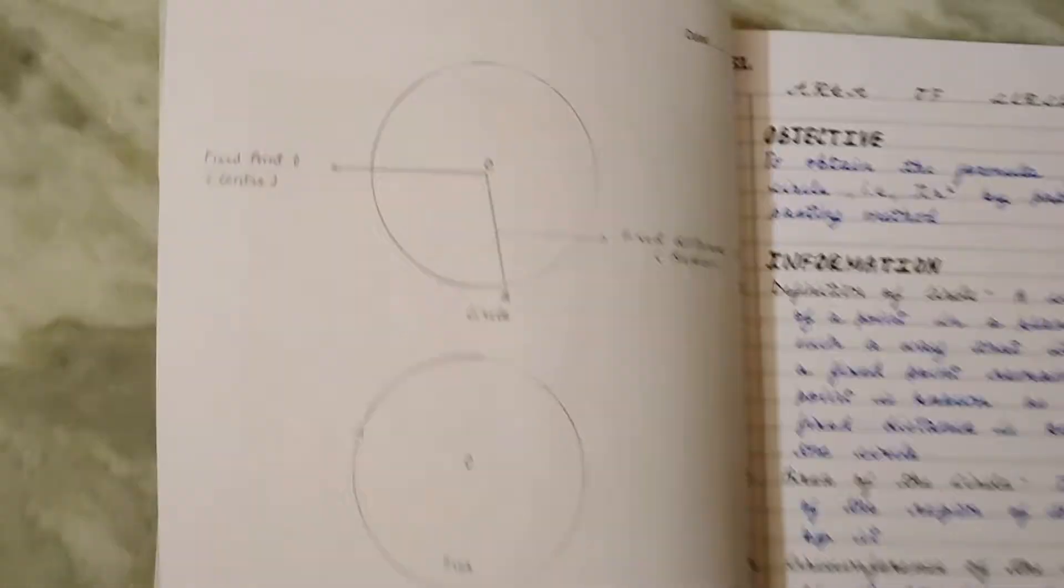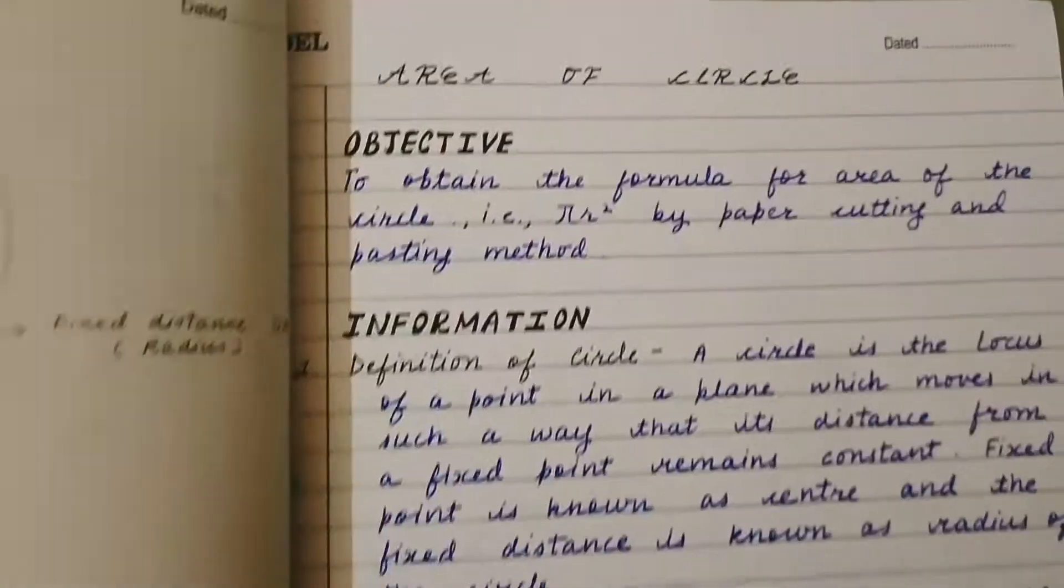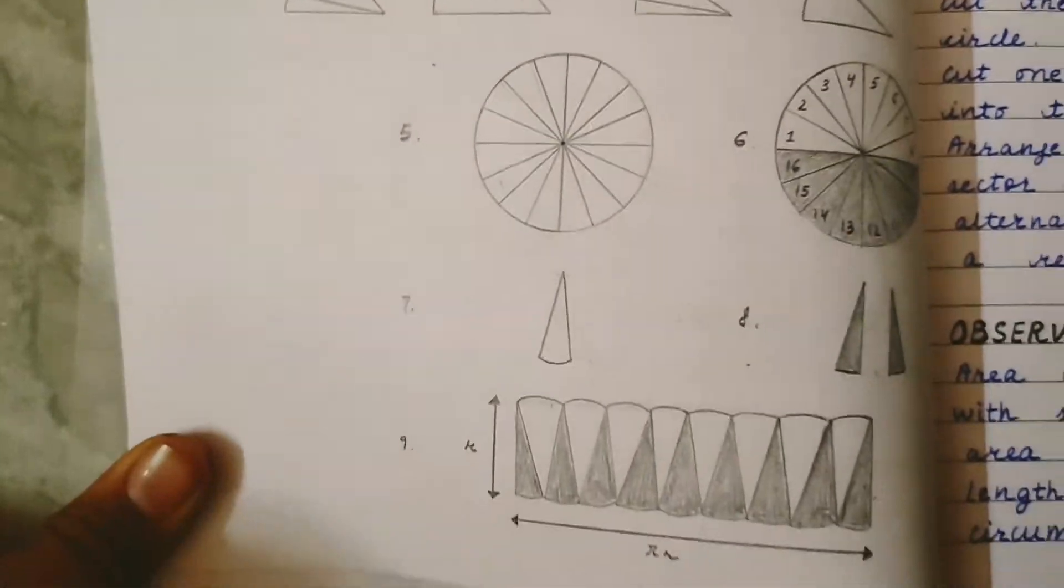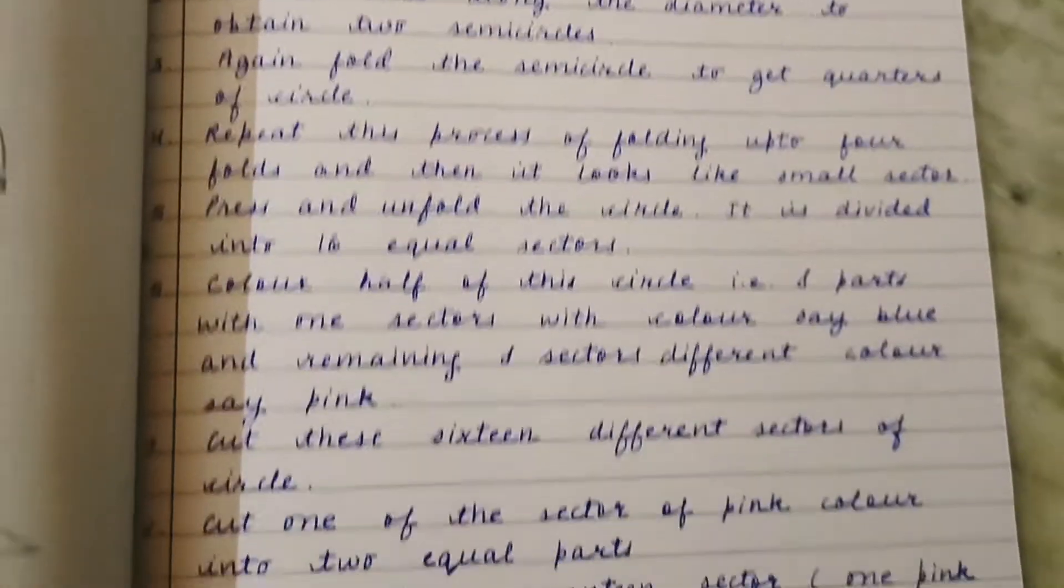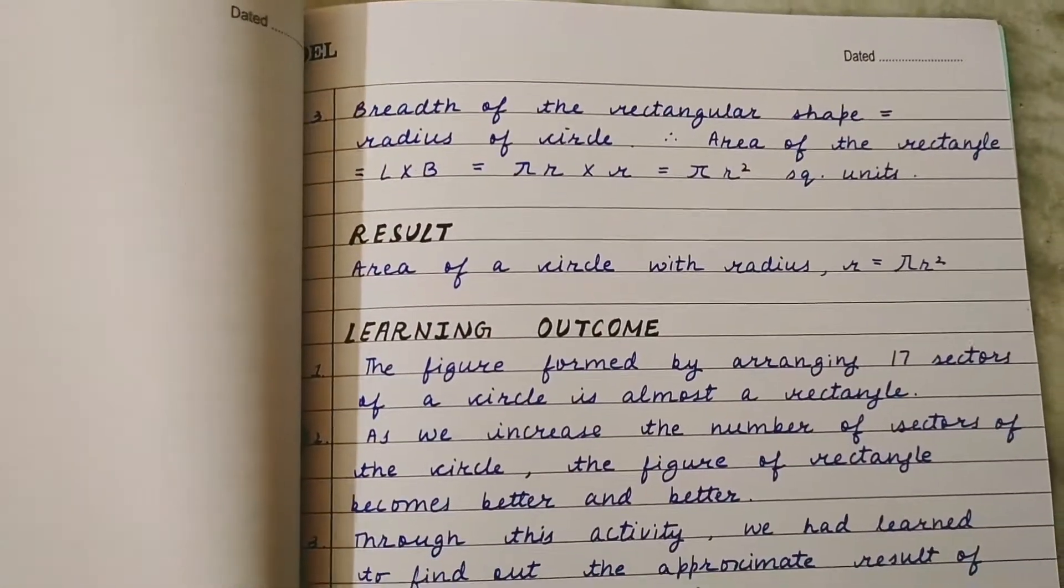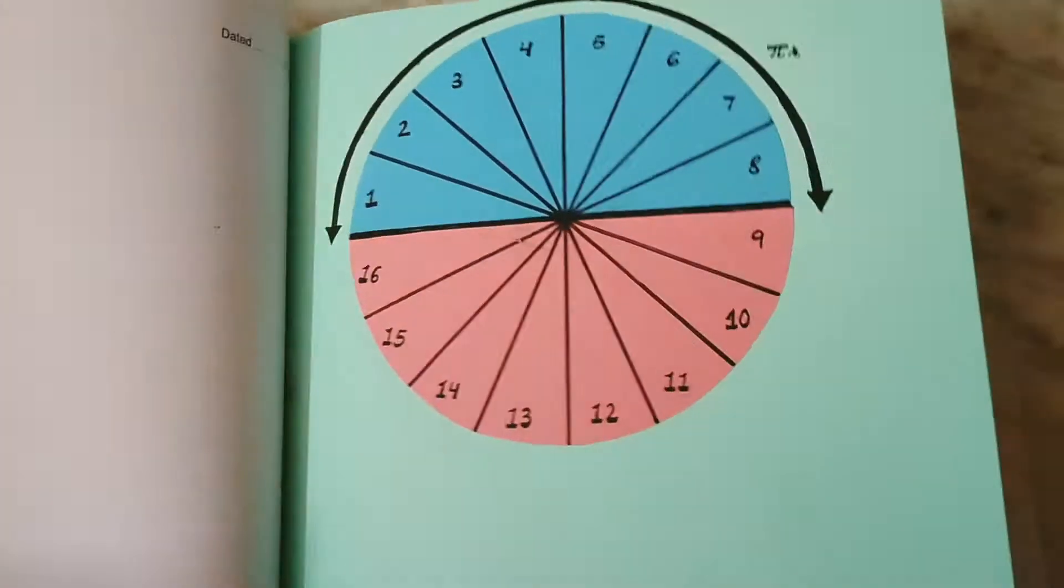So here I have written about the circle and the activity, its objective, information, material required, procedure and observations, and at the last its results and learning outcomes.